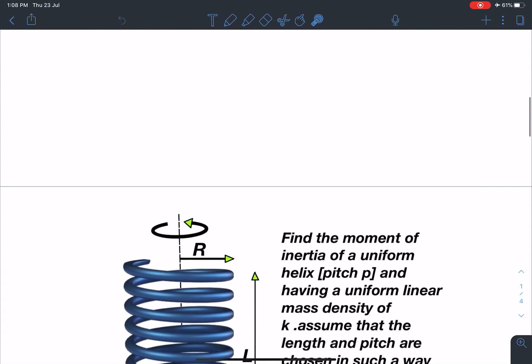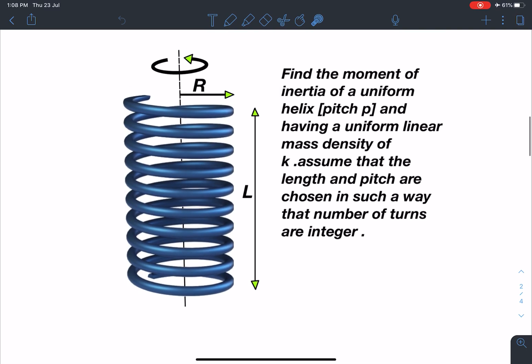So here is the statement of this problem and there is a regular helix here with uniform pitch P, radius of helix R, and total length L. The problem is: find the moment of inertia of a uniform helix with pitch P and having uniform linear mass density K.